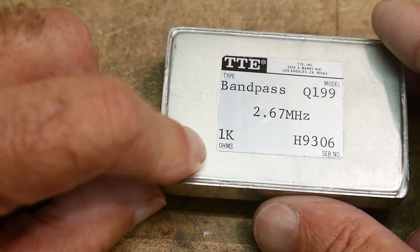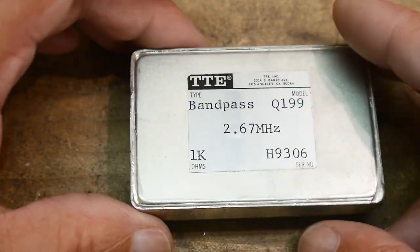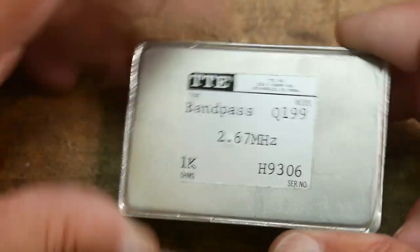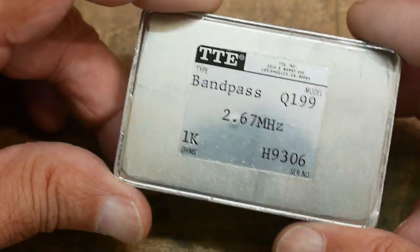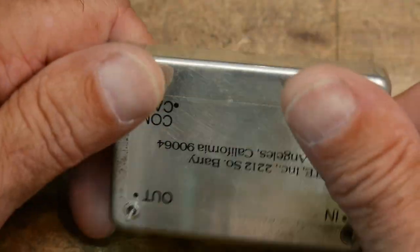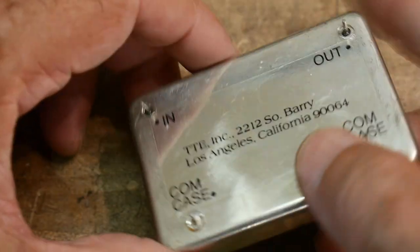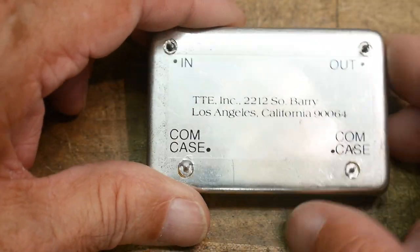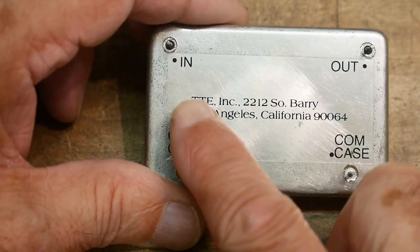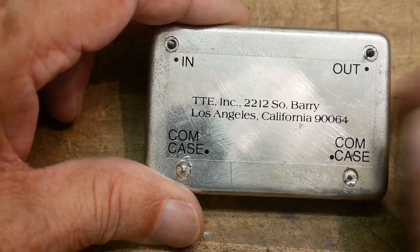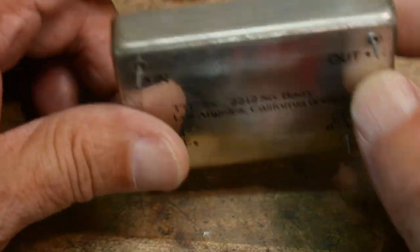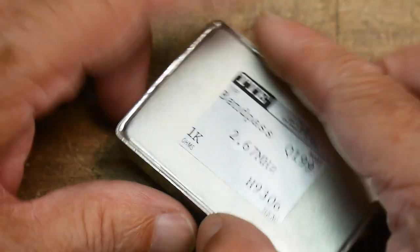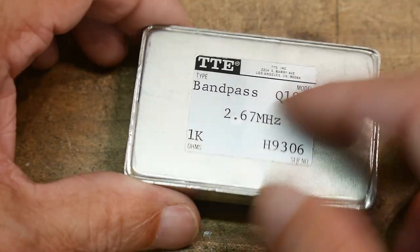If you're going from a 50 ohm system into this, you need to transform it up to 1k and then bring it back down to 50 ohms. But just to see the shape on the spectrum analyzer, we don't need to do that. There's something on the back here - just their logo again, in, out, and common, otherwise known as ground.